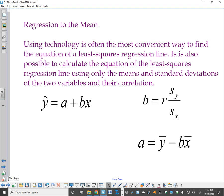Using technology is often the most convenient way to find the equation of a least squares regression line. It is also possible to calculate the equation of the least squares regression line using only the means and standard deviations of the two variables and their correlation.